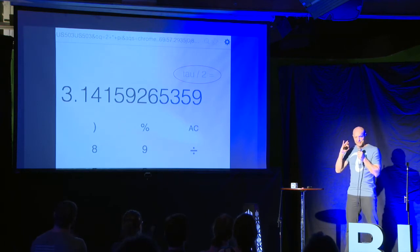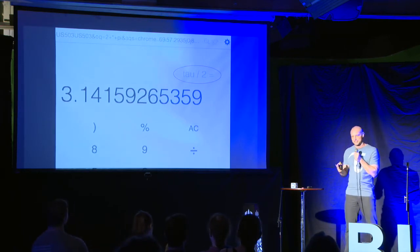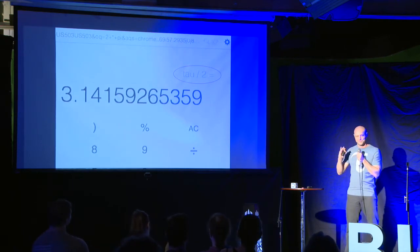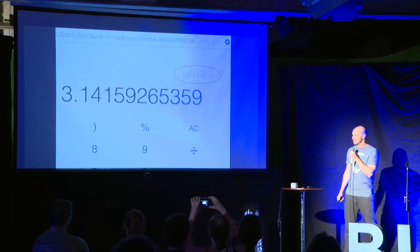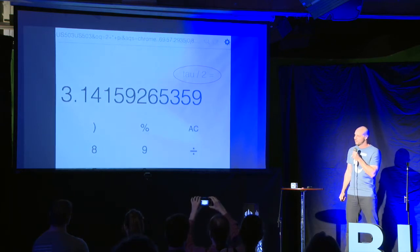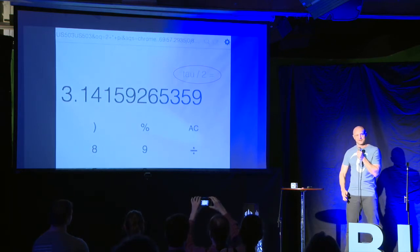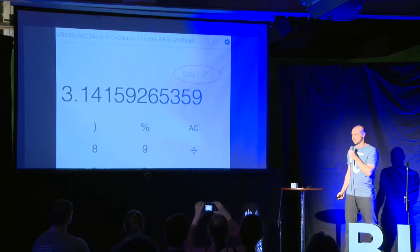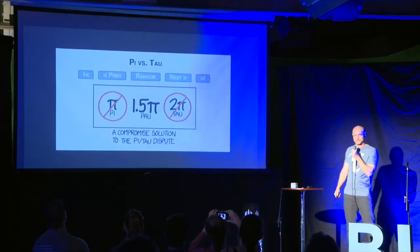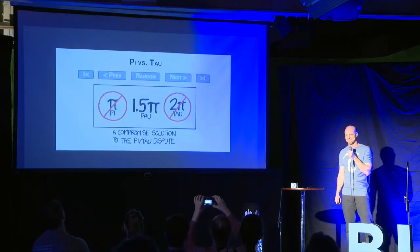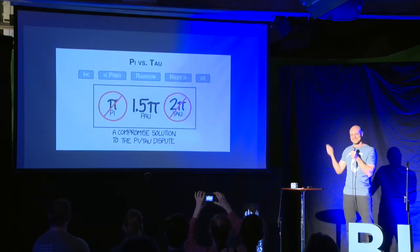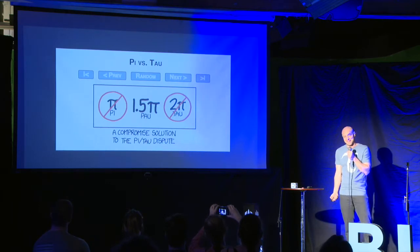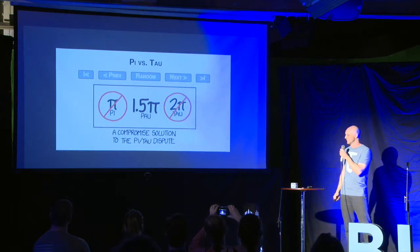As the final crowning achievement and proof that I had successfully hacked geek culture, last year tau appeared in the iconic geek comic strip XKCD — pi versus tau. I knew I'd won it. You can't beat XKCD.